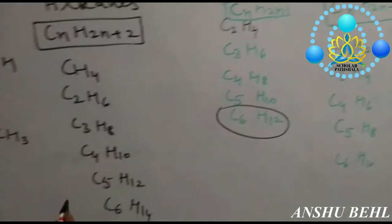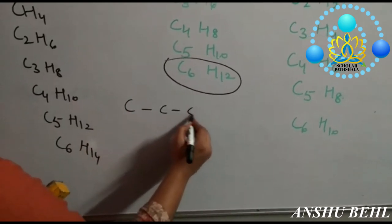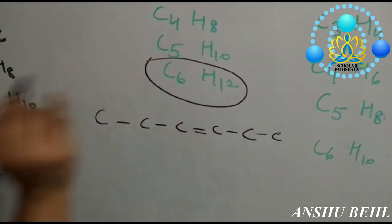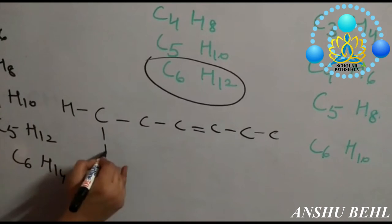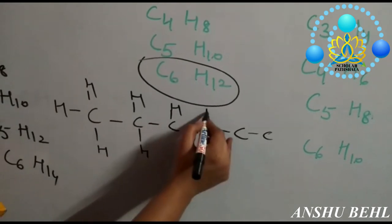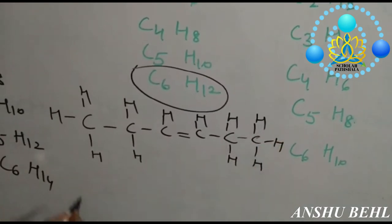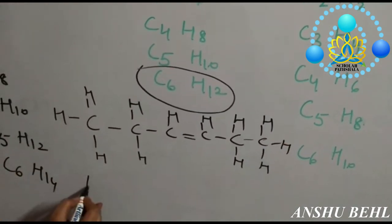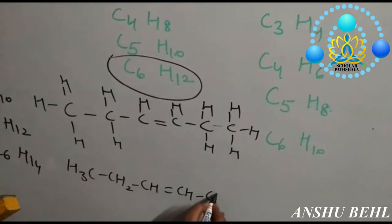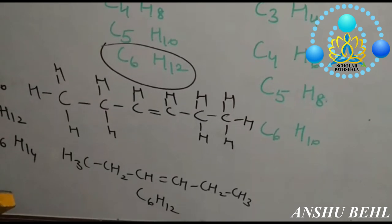For example, C6H12 has hydrogen atoms exactly double the carbon count, so it is an alkene. Take a 6-carbon chain, draw one double bond, and complete the valencies so all carbons have four bonds each. This gives CH3-CH2-CH=CH-CH2-CH3, which is C6H12.